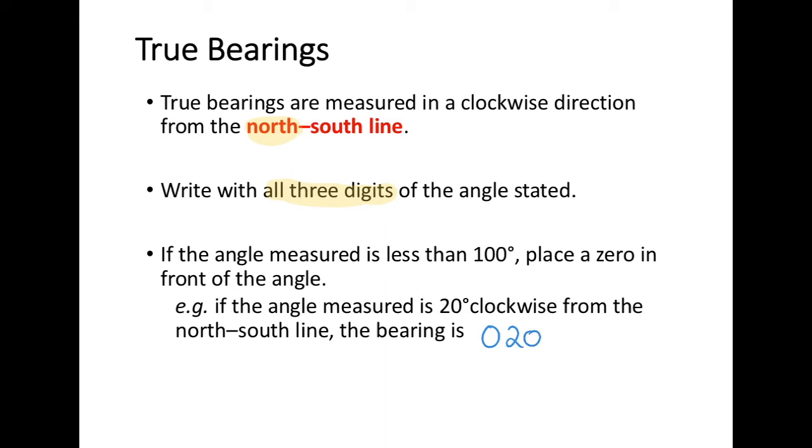When using true bearings, for our unit of measurement, we put in our degrees and then a capital T. So our measurement for this example is 020°T, which is 20 degrees true north. Always use a capital T after the degrees to indicate that we are measuring in true bearings.